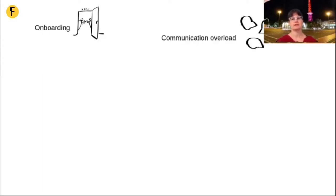As your team and organization grows, you will also run into a challenge with communication overload. At some point, the approach of simply going to Bob and asking a question doesn't work anymore. In open source, we have a solution for that — we don't do one-on-one communication. If you have a question about an Apache project, you don't go to the individual committer. What you do is go to a mailing list — a user mailing list or a dev mailing list — so essentially you go to a central communication hub.